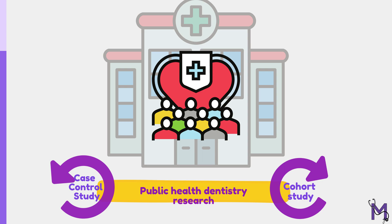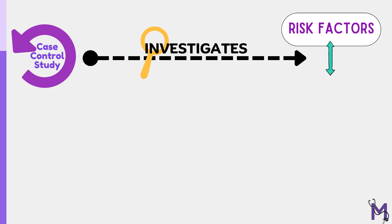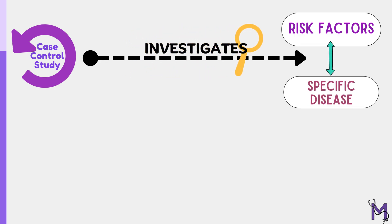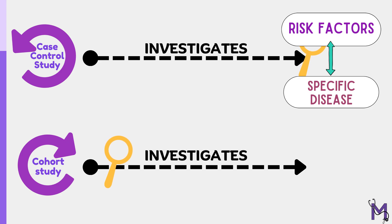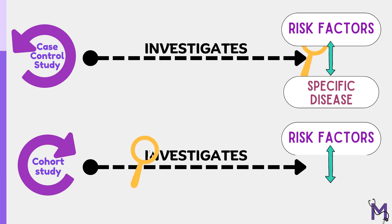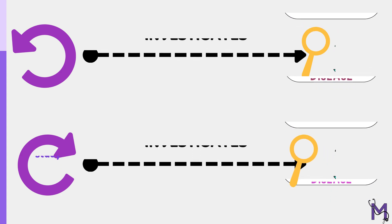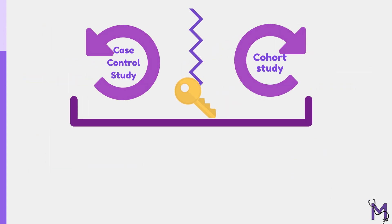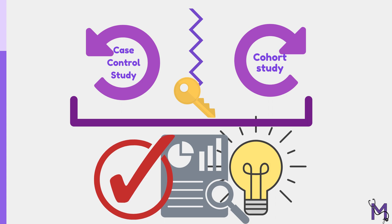In summary, case-control and cohort studies are both valuable study designs in public health dentistry research. Case-control studies are useful for investigating the association between risk factors and specific diseases, while cohort studies are useful for investigating the relationship between risk factors and the incidence of a disease over time. By understanding these differences, dental researchers can choose the most appropriate study design for their research questions and objectives.